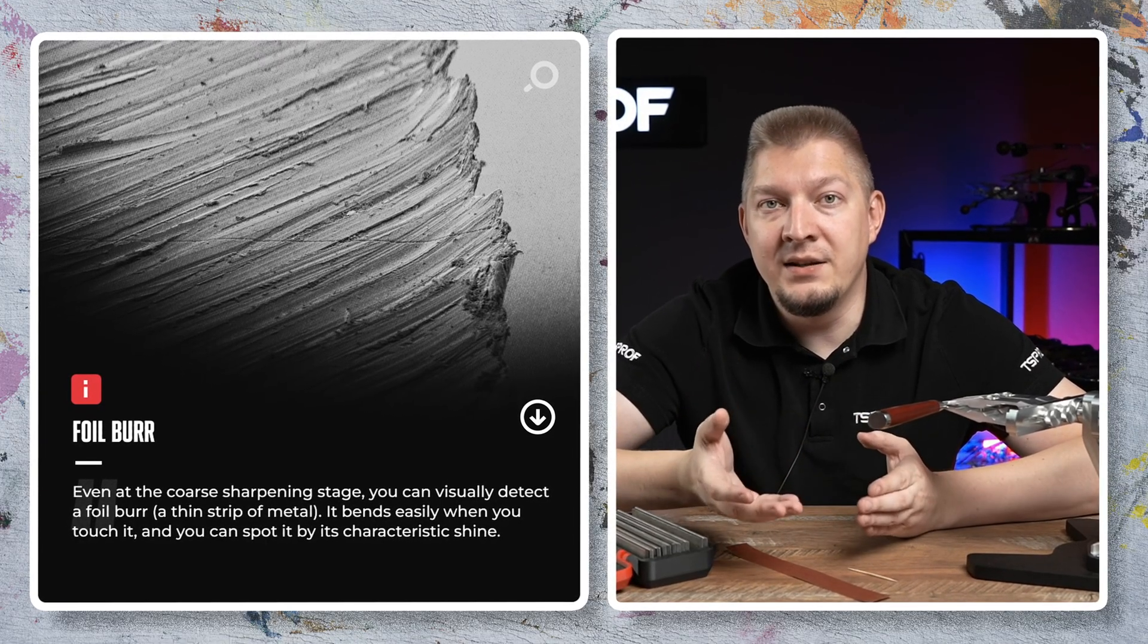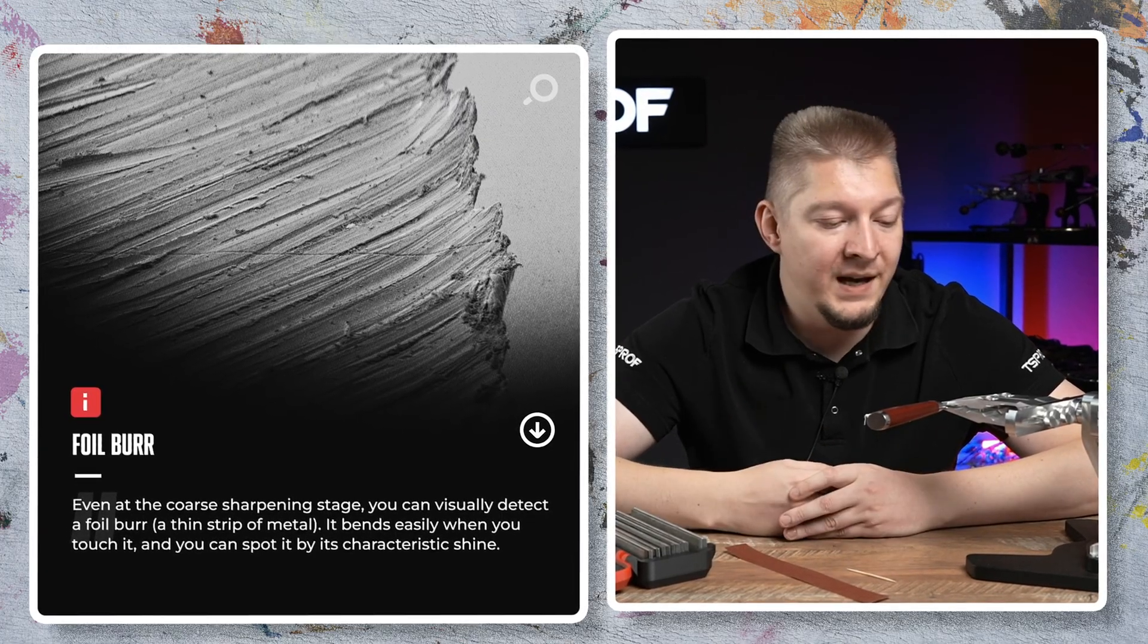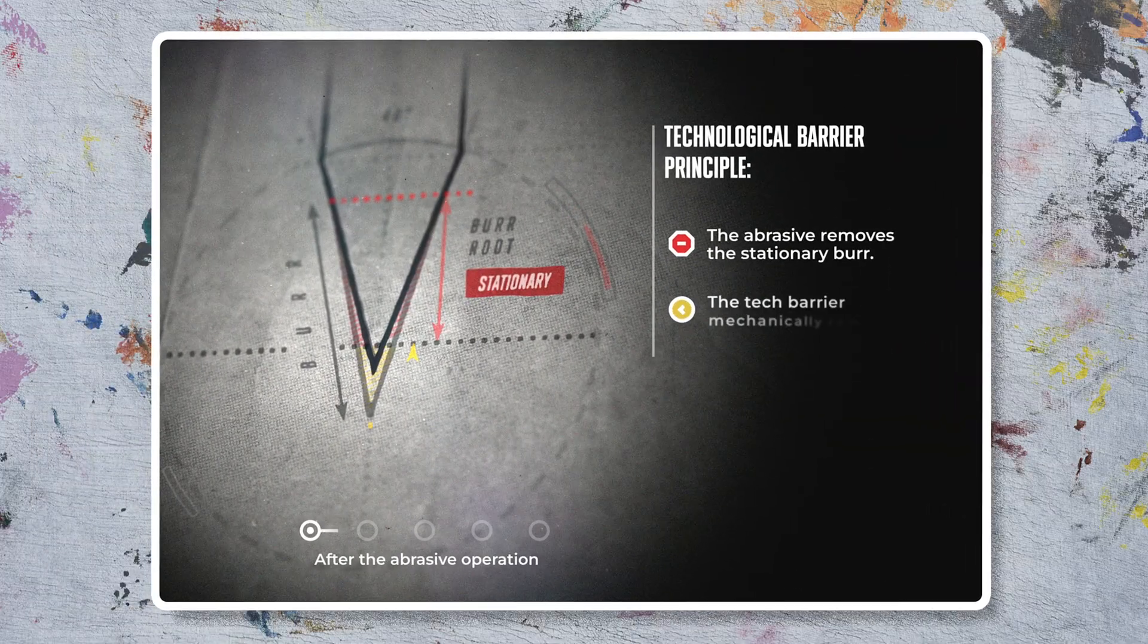What happens when we move on to the next stone? This burr along with part of the cutting edge simply falls off, and sharpening a knife with such a burr is quite problematic. In this case you need to get rid of it.